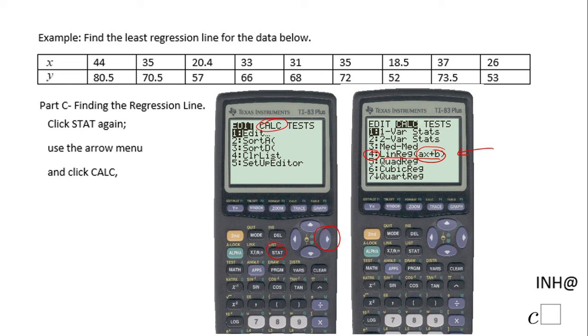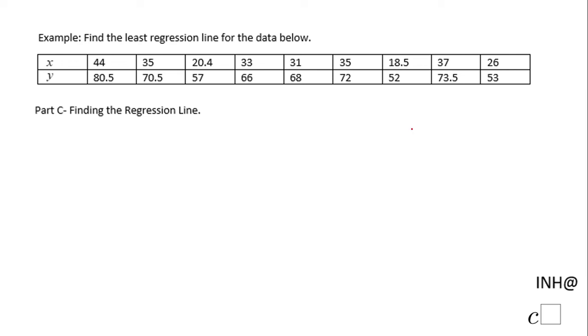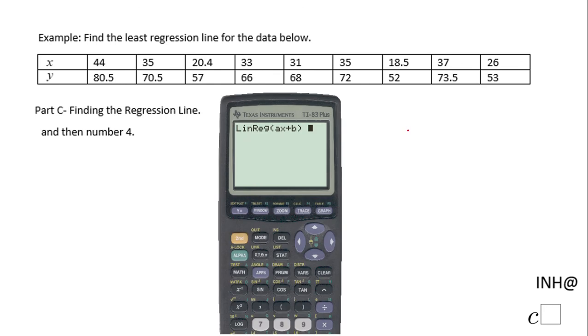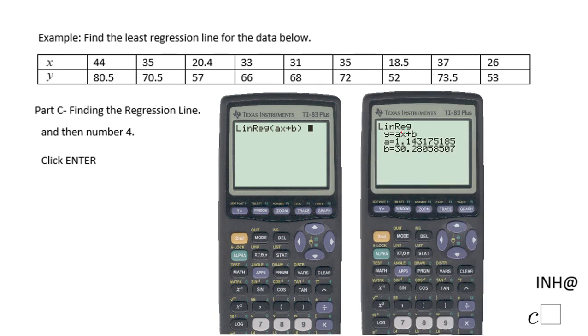You're going to click that number four, or you use the drop menu if you want, and click enter. You're going to get this message on your calculator, and then click enter. And that's it, you have the equation of the regression line.